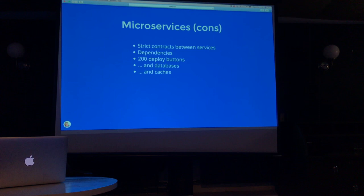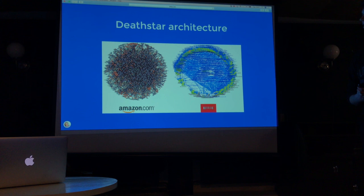Now these are architectures of Amazon and Netflix. This is not complete because these are overview pictures, but it's called a star architecture, and you can see dependencies between microservices here. So now you can see how much management they need to handle all this stuff.